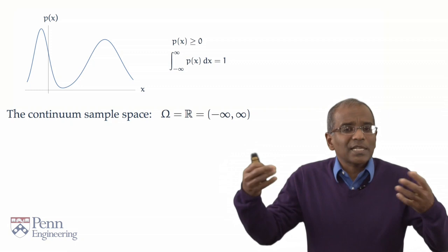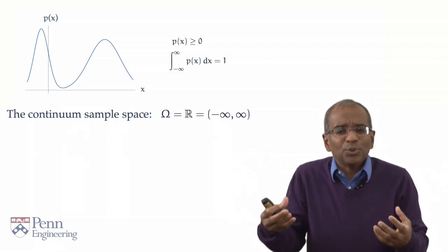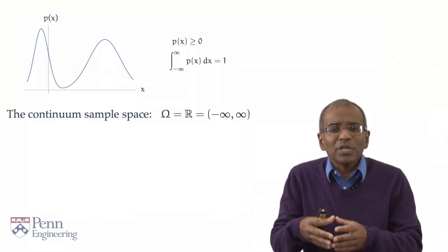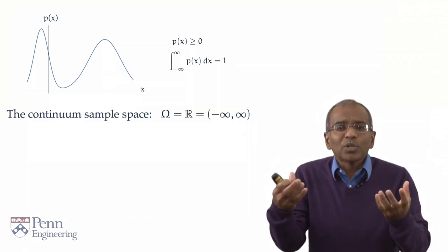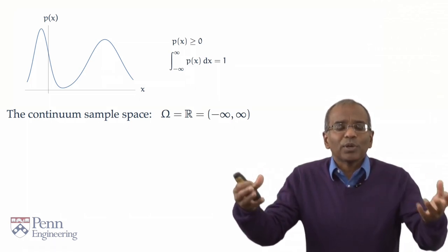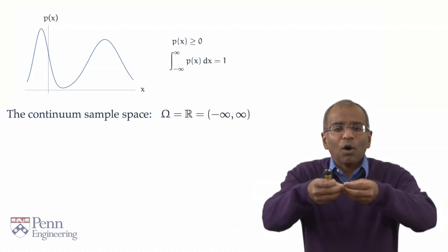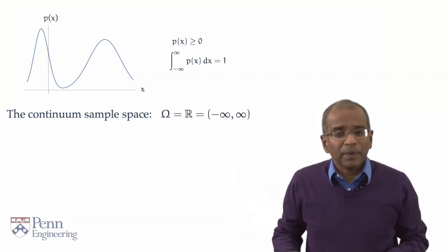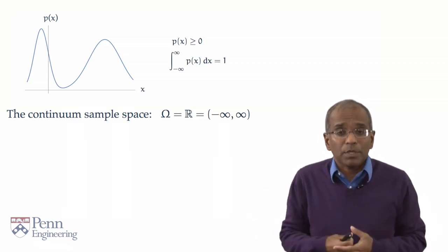And in settings like this, tradition compels us to use a letter rather different from capital omega. We use blackboard bold R to denote the real line. And of course, it just means all real numbers from minus infinity to plus infinity. We think of this as a limiting experiment.